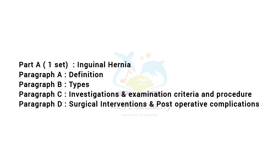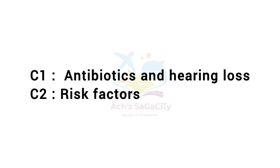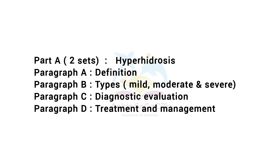In the reading module, first set Part A was about inguinal hernia. Paragraph A covered the definition, paragraph B types of hernia, paragraph C investigation and examination criteria including procedure, paragraph D surgical interventions and post-operative complications. C1 included antibiotics and hearing loss, and C2 covered risk factors.